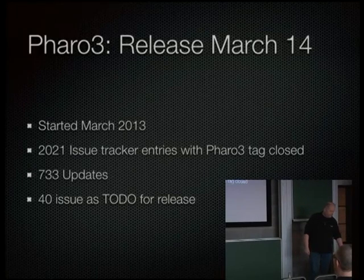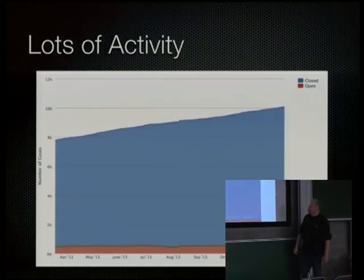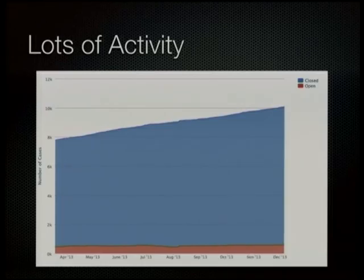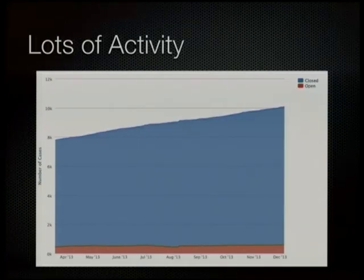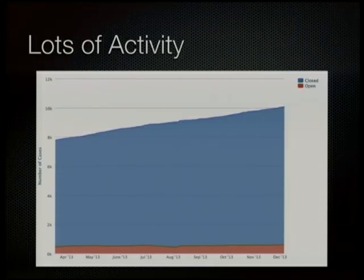We still have 40 issues tagged that we need to fix before we can release, but we hope to do that by March. This graph — made in December, so a bit outdated — shows the release date of Pharo 2 and then up to shortly before Christmas. You can see that the open issues stay more or less constant, always around 500, between 450 and 550 issues. It's really difficult to get that number down despite sprints, but the interesting thing is it stays constant — even so, people open a lot of issue tracker entries, and they get closed too. We managed to close 2,000 issue tracker entries within the development of Pharo 3.